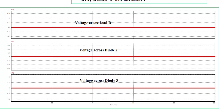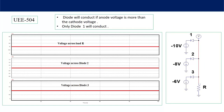It is concluded that though the cathode voltages are negative, the diode having the maximum negative voltage will conduct. Based on this, in a three-phase full wave converter, the thyristor having maximum negative voltage will conduct.